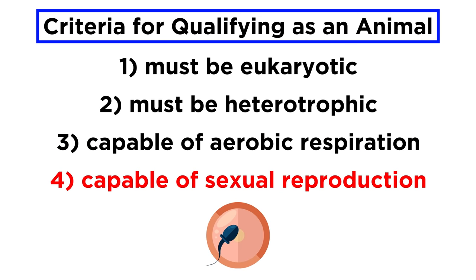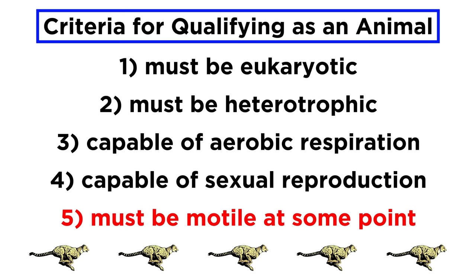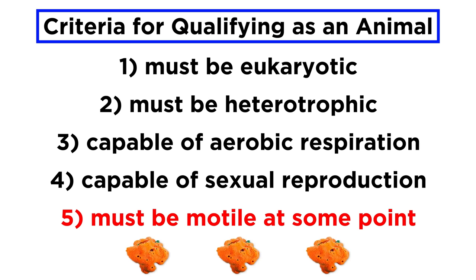Number four, animals engage in sexual reproduction. Believe it or not, even sponges do this, though it is quite a bit different from what one typically envisions. My biology tutorials on mitosis and meiosis will be crucial review here. Number five, animals are free-moving, or motile, at least at some point in their lives. Even things like sponges, which can't move freely or swim as adults, are able to move around as little baby sponges.